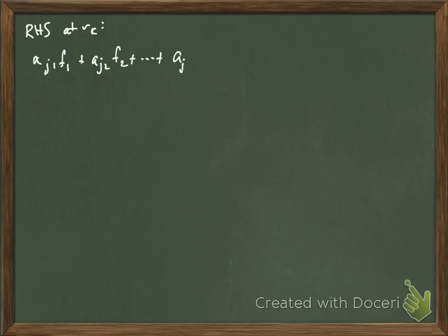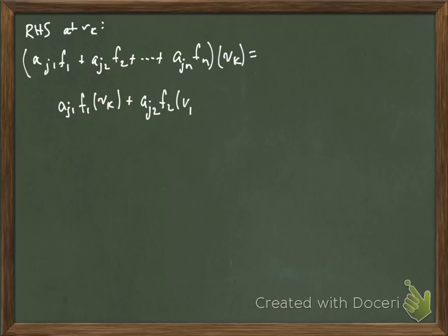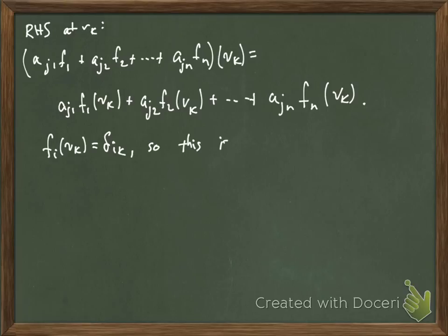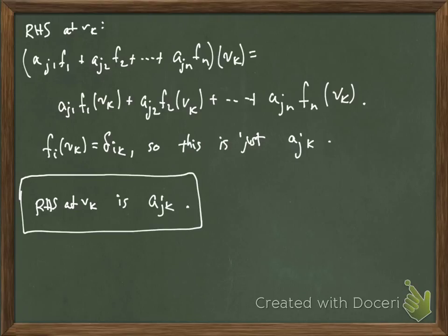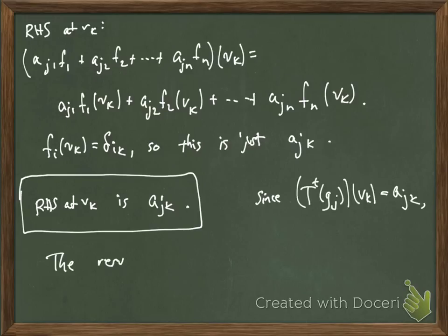Now we compute the right-hand side at Vk, and so that's this functional evaluated at Vk, but then by definition, the sum evaluated at Vk is just the point-wise sum. So we evaluate each of the functionals at Vk. And now remember that the Fi's are coordinate functions, and so Fi Vk is 1 if i equals k and 0 otherwise, Kronecker delta. And so then the only term that survives is Ajk. And so the right-hand side evaluated at Vk is also Ajk. Since that agrees with the left-hand side for Vk, and k was just general, the result follows.